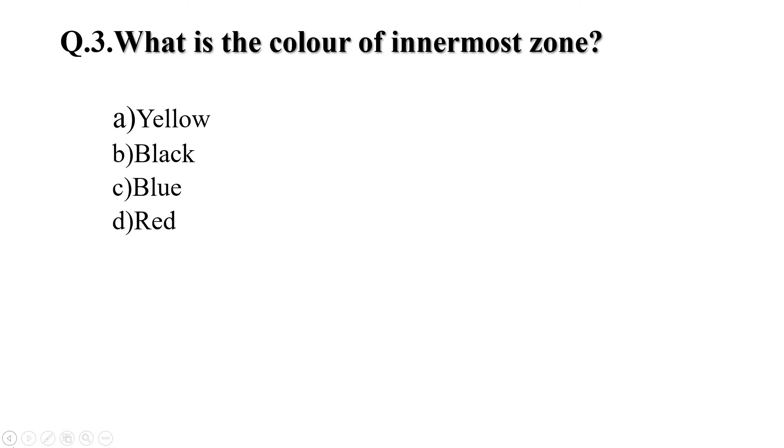Question 3: What is the color of innermost zone? A, yellow; B, black; C, blue; D, red. And right answer is B, black.